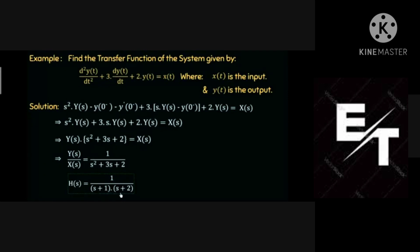Control systems are a combination of mathematical models: differential equations, Laplace transforms, and state space. If you are comfortable with mathematics, you can easily handle this subject. In the second step, taking Y(s) common: Y(s)·(s² + 3s + 2) = X(s). The transfer function H(s) = Y(s)/X(s) = 1/(s² + 3s + 2).